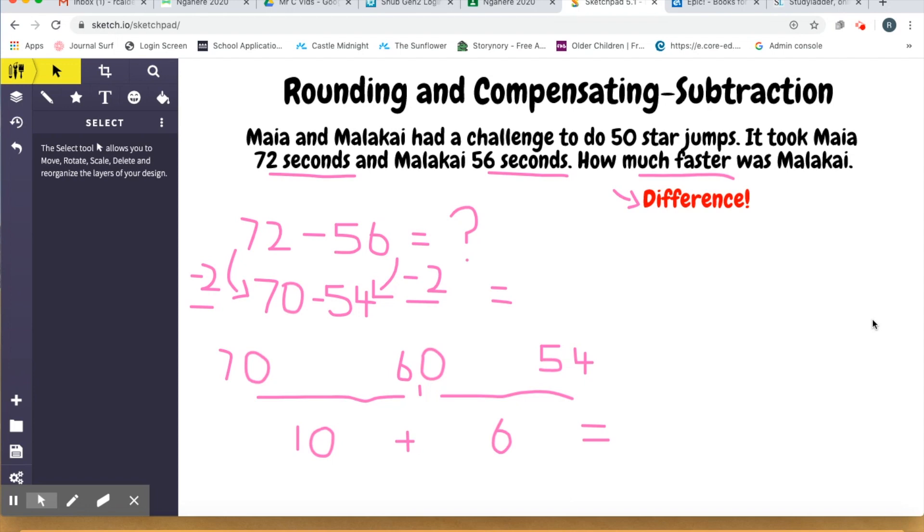Now we're going to be looking at rounding and compensating for subtraction. I've got a question here. Maya and Malachi had a challenge to do 50 star jumps. It took Maya 72 seconds and Malachi 56 seconds. How much faster was Malachi? Now again, I've highlighted the key information from this word problem. I've got the numbers 56, I've got the number 72 and how much faster. That sentence there, how much faster was Malachi, shows to me that we're looking for the difference between two numbers. One is bigger than the other and we want to find out how much bigger, what is the difference between them. So that means that it is definitely going to be a subtraction problem.